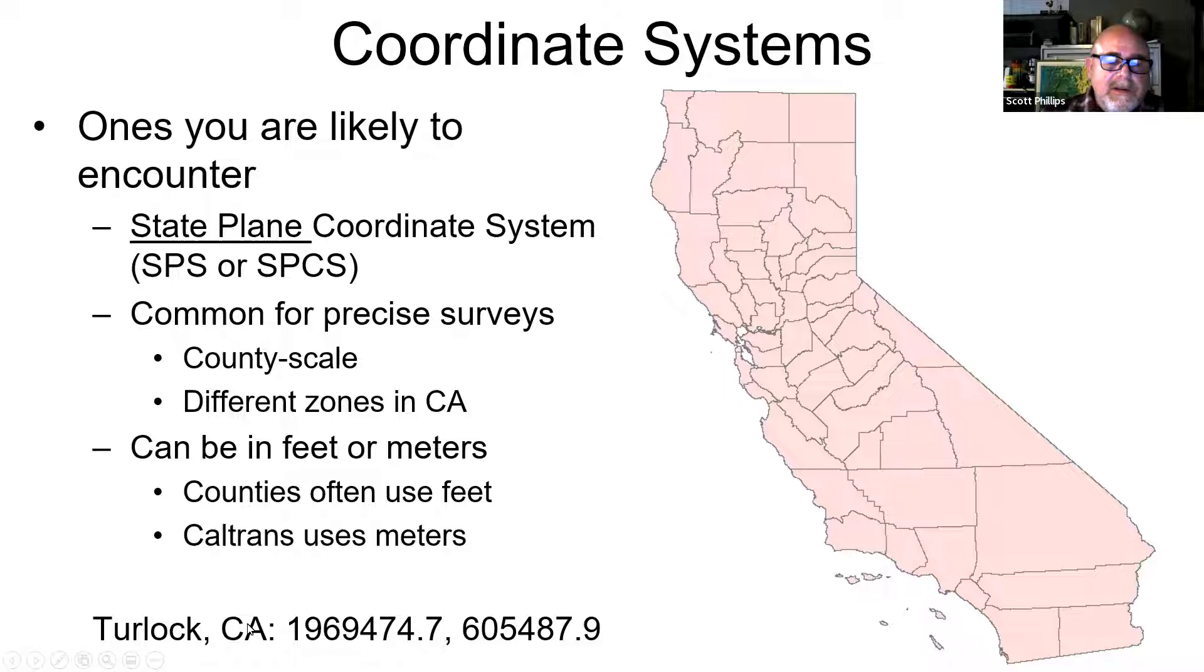Here, this would be the coordinates for Turlock, California, but these would be in feet rather than meters. This would be kind of unique to this type of a coordinate system.